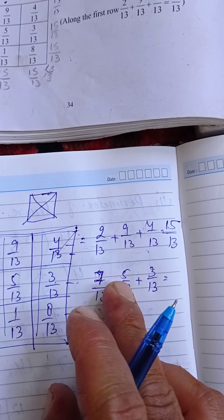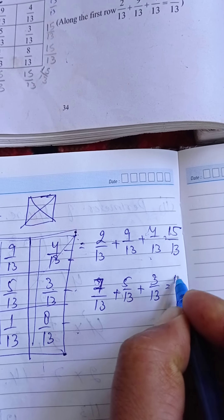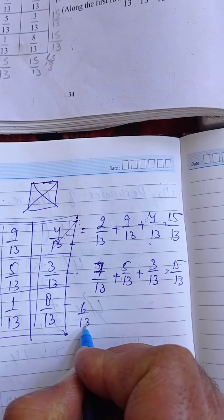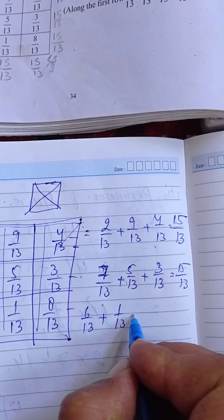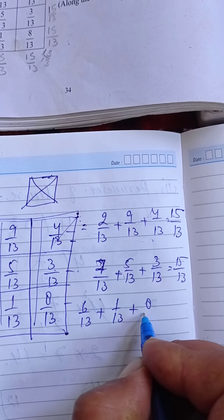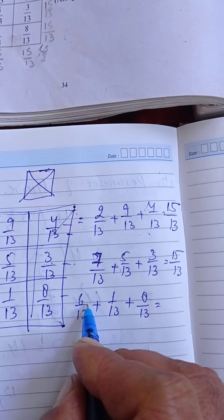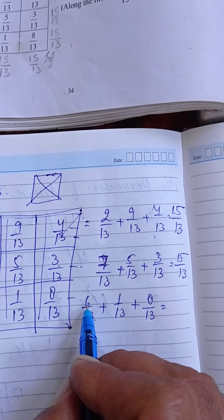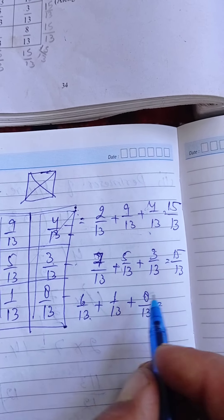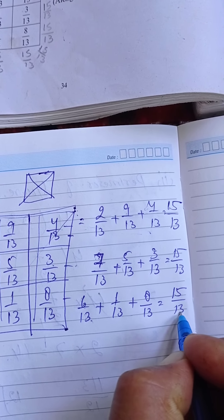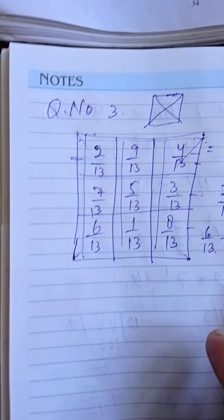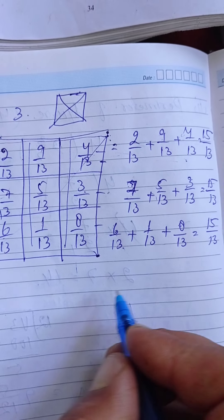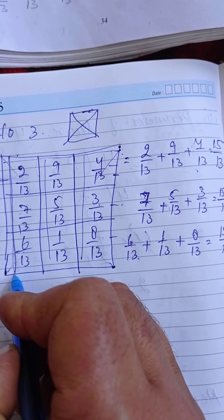7 + 5 = 12, 12 + 3 = 15, so the second row also gives 15/13. For the third row: 6/13 + 1/13 + 8/13. Adding numerators: 6 + 1 = 7, 7 + 8 = 15, giving 15/13. All three rows are equal.